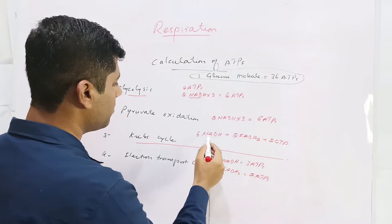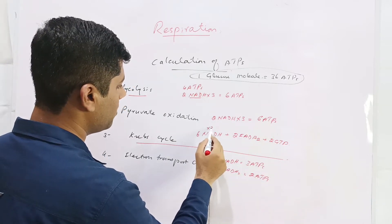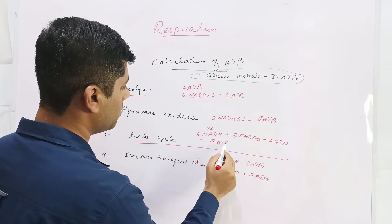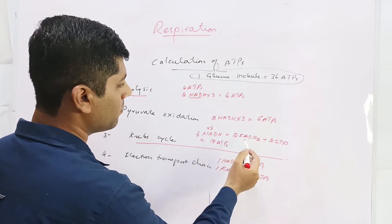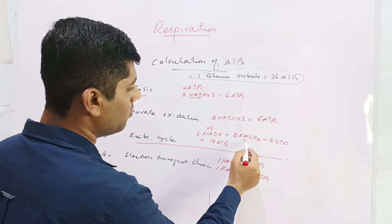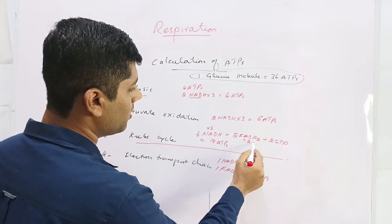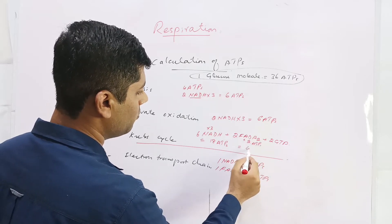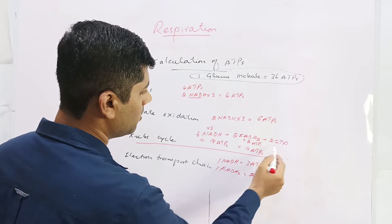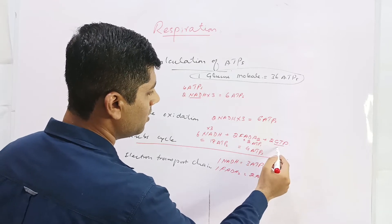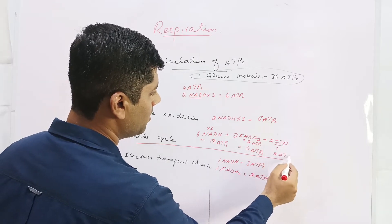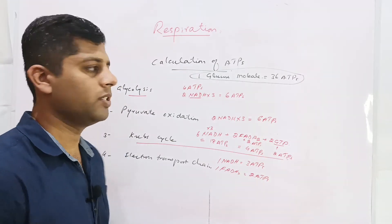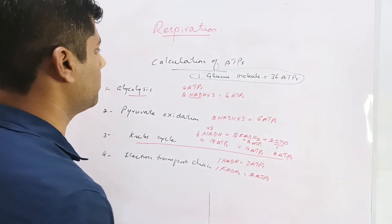In the case of the Krebs cycle, the six NADH molecules multiplied by three produce 18 ATPs. The two FADH2 molecules produce four ATPs in the electron transport chain, and the two GTP are equivalent to two ATPs. So those are produced here as well.